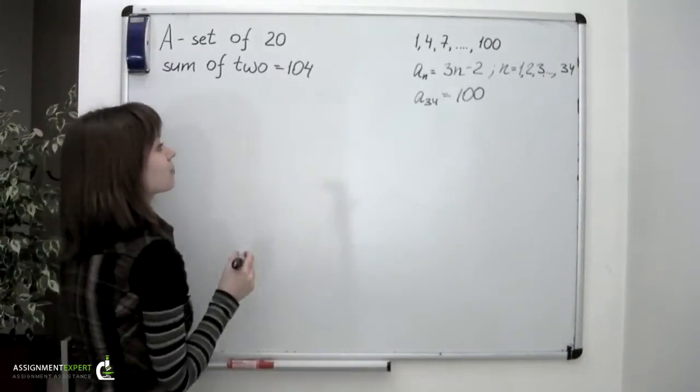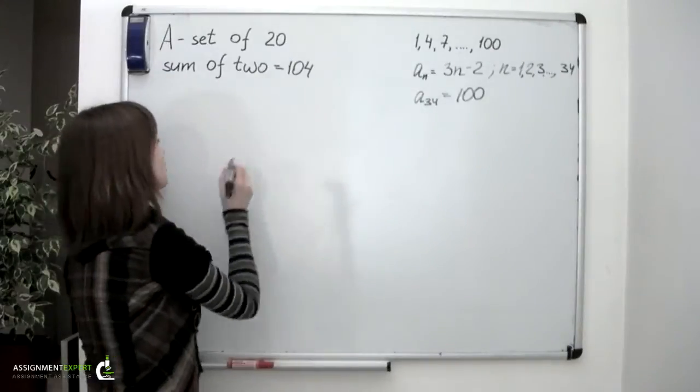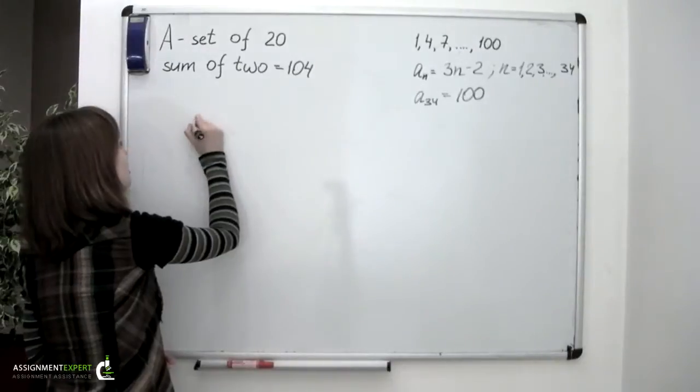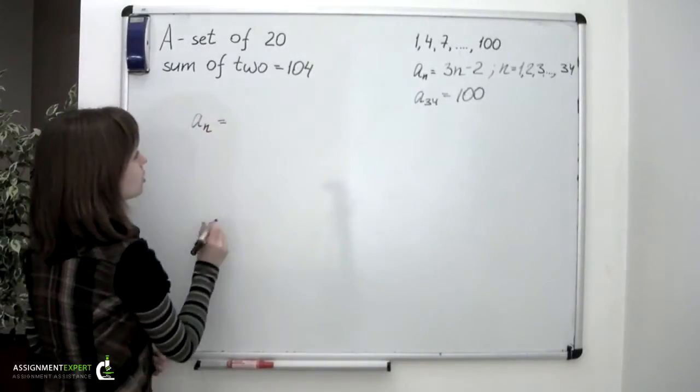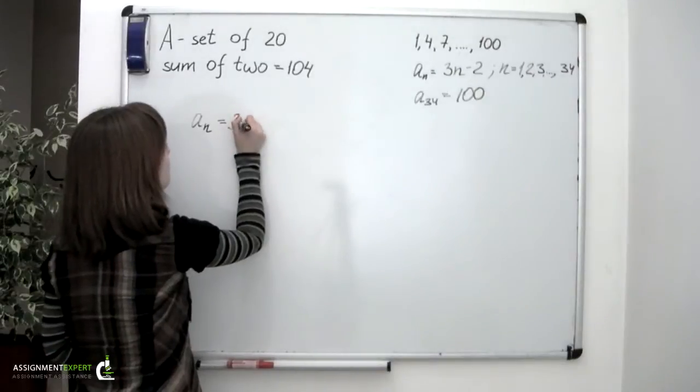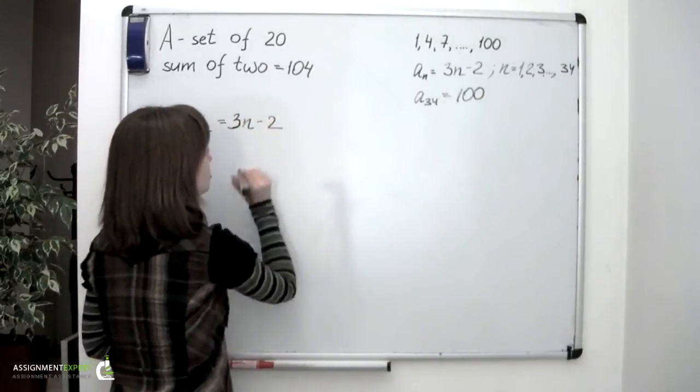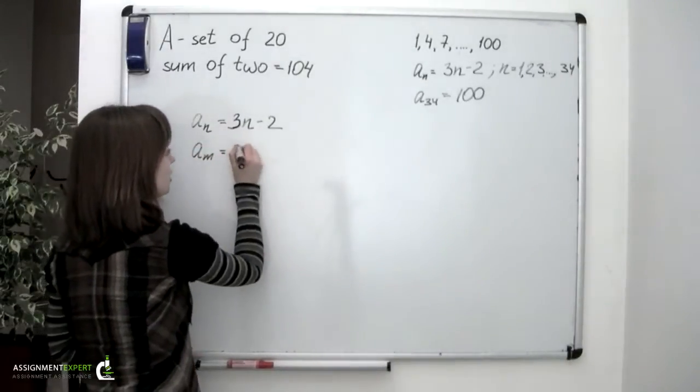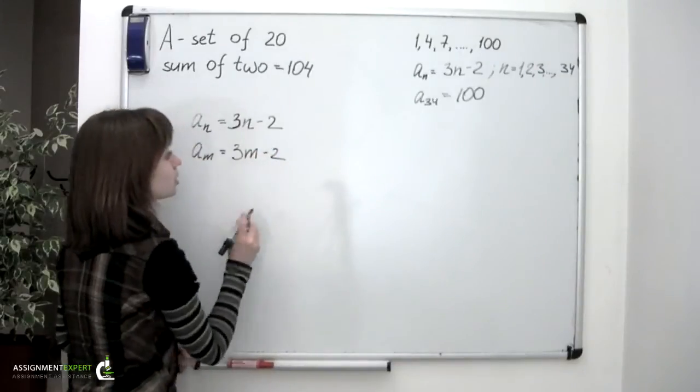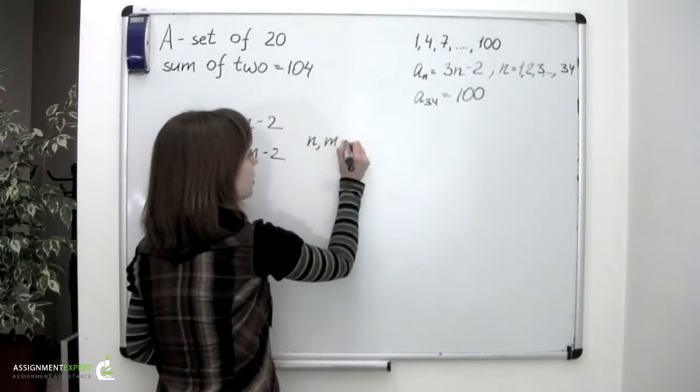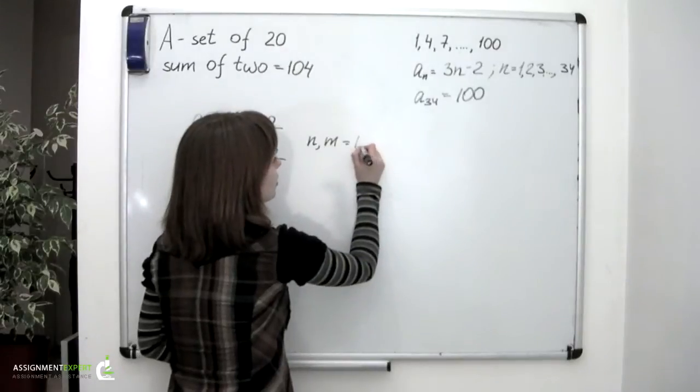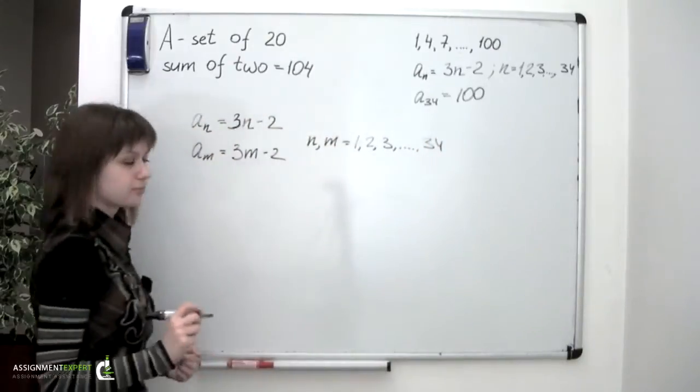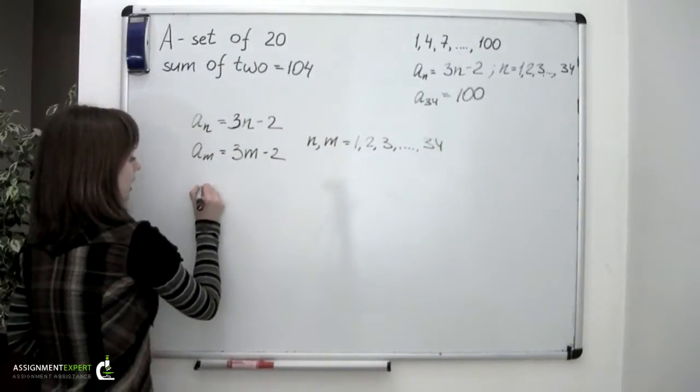Now, we were given a condition that we have to take 2 numbers of this sequence, add them, and obtain 104. If we denote one of them as A sub n, which would be equal to 3n minus 2, and another one as A sub m, which would be equal to 3 times m minus 2, we know that n and m can be equal to 1, 2, 3, up to 34.